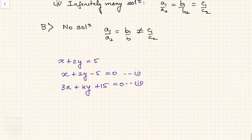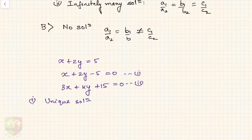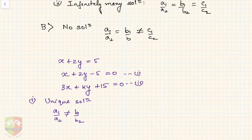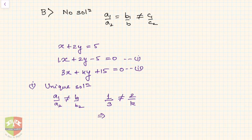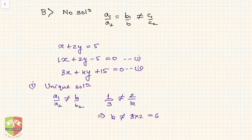We have to find the value of k for a unique solution. For unique solution, a1 by a2 must not equal b1 by b2. Here, a1 is 1 and a2 is 3, so 1 by 3 must not equal 2 by k. Cross-multiplying, k must not equal 3 times 2, which is 6.